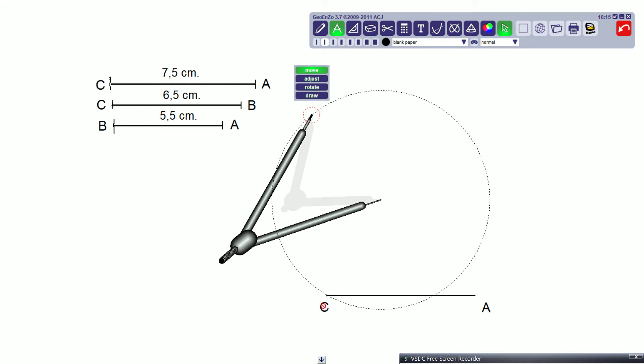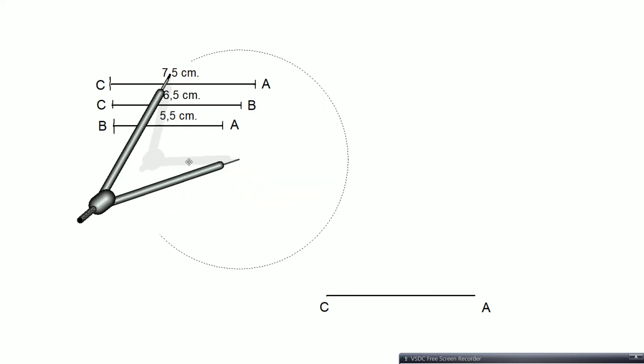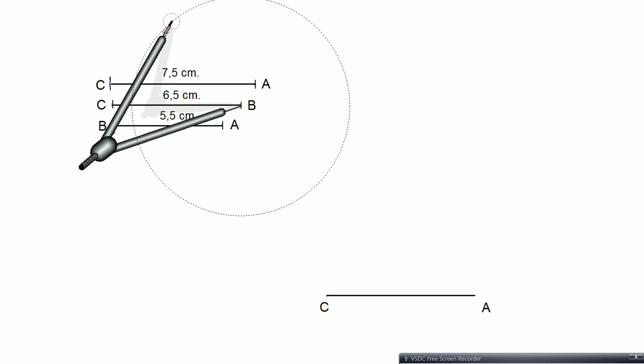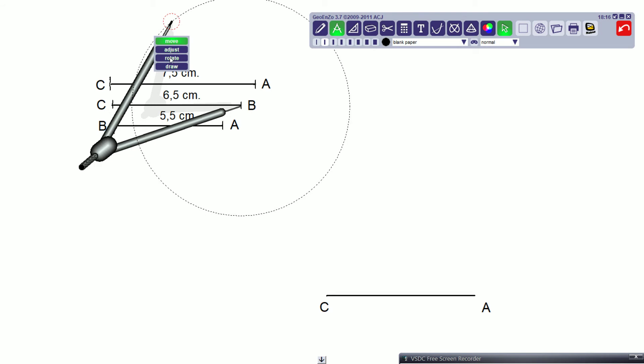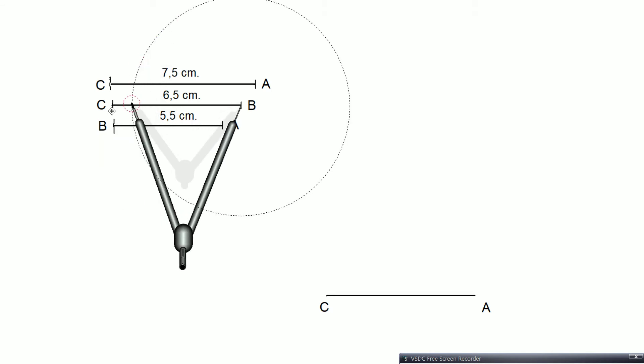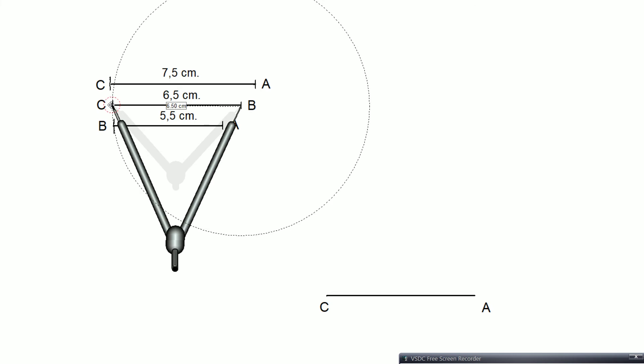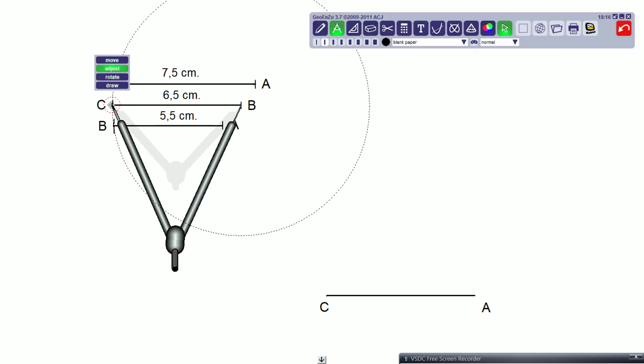So, as we already have the CA side, we are going to take the compass and put it here at the B side, and I'm going to open it with the measure of our CB side that is 6.5.